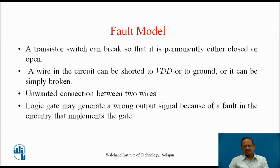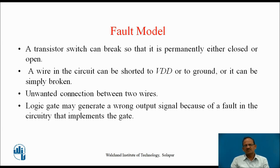Now we will see a fault model. The circuit behaves incorrectly if something goes wrong with it — maybe a transistor fault or maybe an interconnection fault. For example, a transistor switch can break so that it is permanently either closed or open. A wire in the circuit can be shorted to VDD or to ground, or it can simply be broken. There can also be an unwanted connection between two wires, or a logic gate may generate a wrong output signal because of some fault in the circuitry implementing that gate.